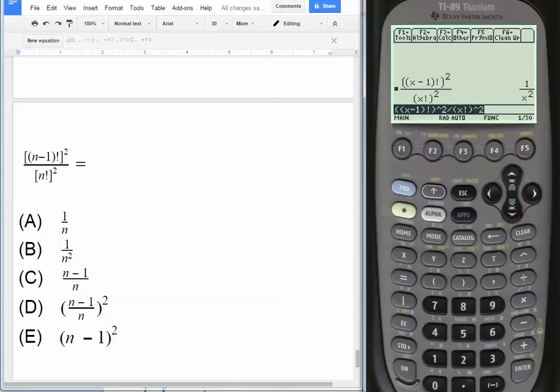Which is the same as 1 over n squared, so the answer would be choice B. Couldn't be any easier.